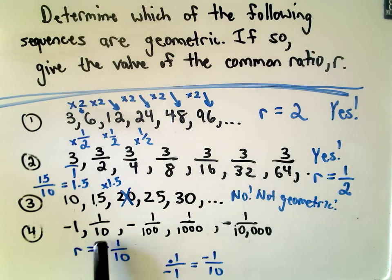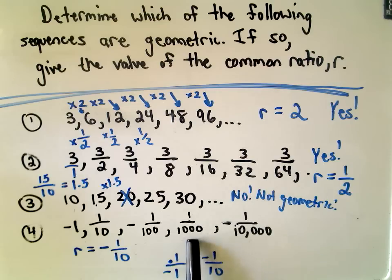Notice if you multiply by negative 1 tenth, so positive 1 tenth times negative 1 tenth, that would give us negative 1 over 100. If you multiply negative 1 over 100 by negative 1 over 10, it's going to turn positive. The top stays 1. The bottom, you're going to get 1,000, so that looks like that works. And then if you take 1 over 1,000 and multiply it by negative 1 over 10, you get the number negative 1 over 10,000.